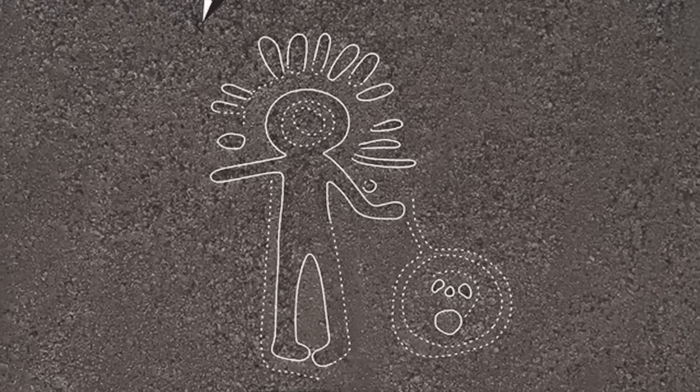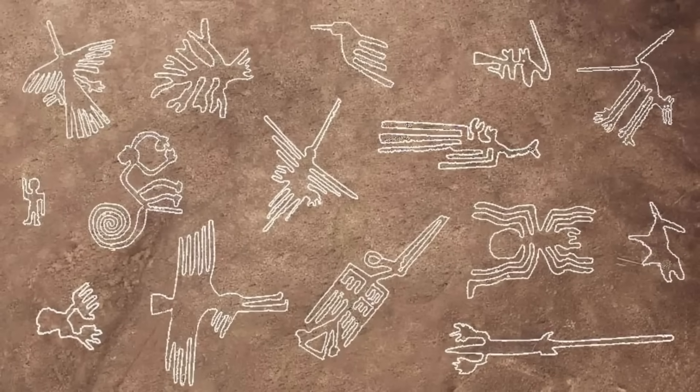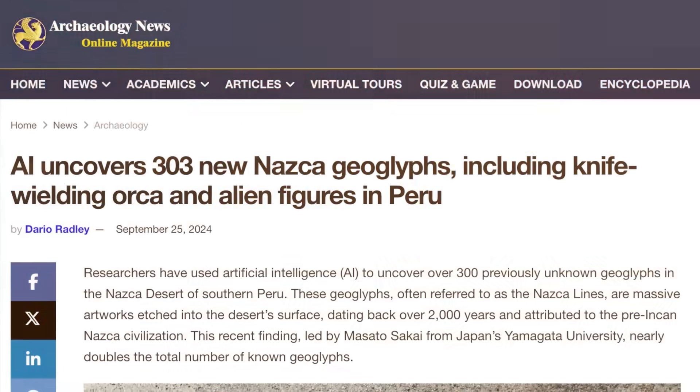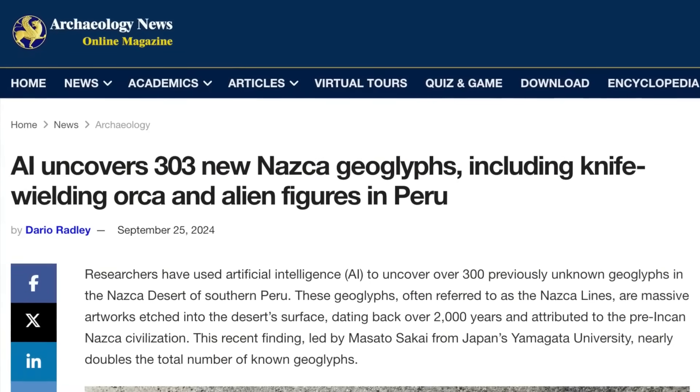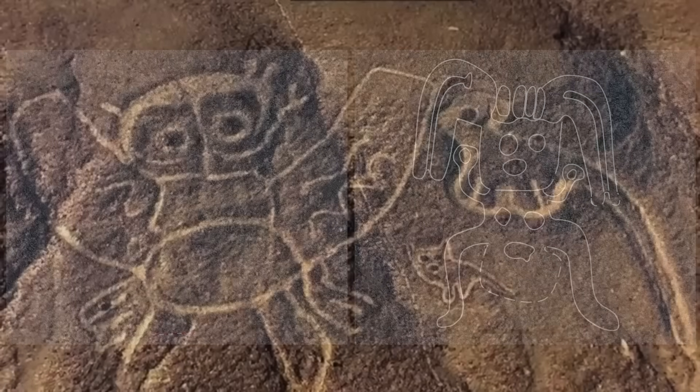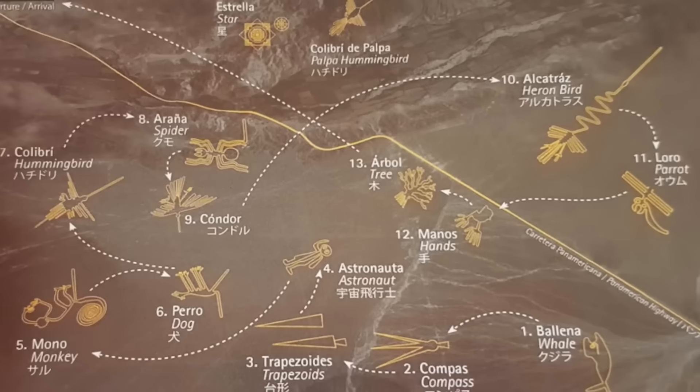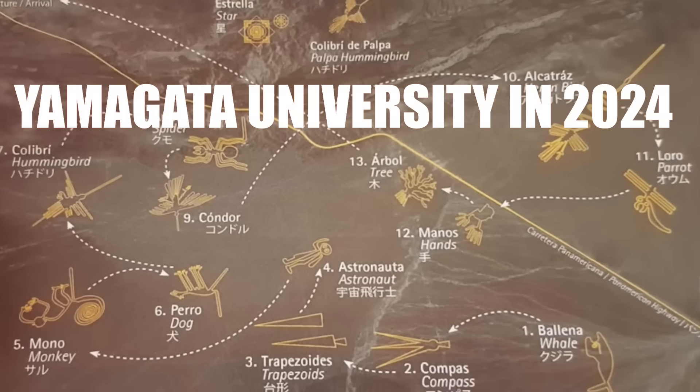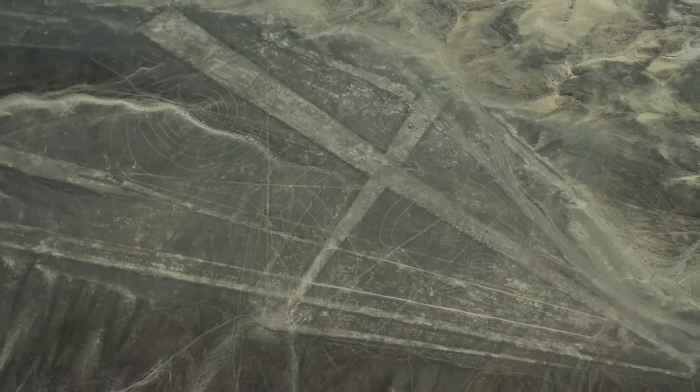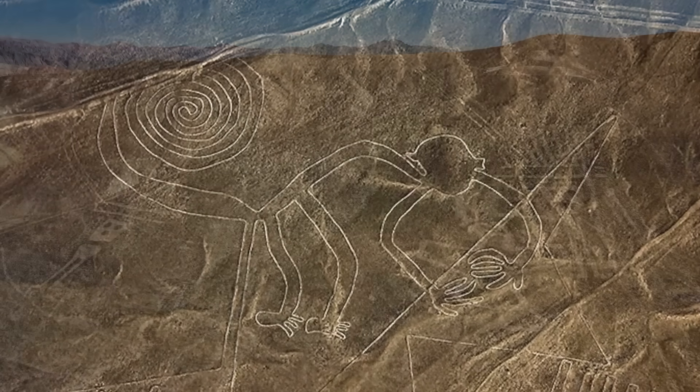Archaeologists in Peru used AI to scan aerial and drone images of the Nazca Plateau and uncovered 303 new geoglyphs. These are massive desert carvings depicting humans, animals, and abstract shapes. These findings, published by Yamagata University in 2024, nearly doubled the known collection of Nazca lines.